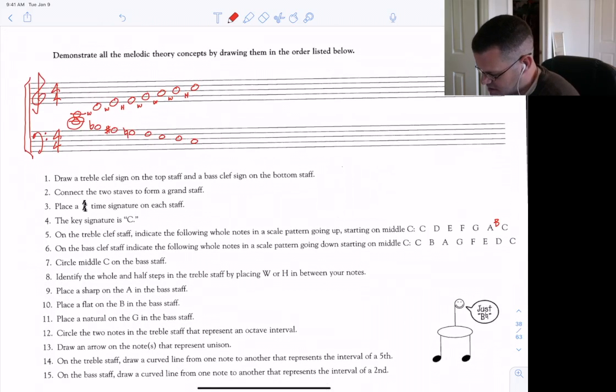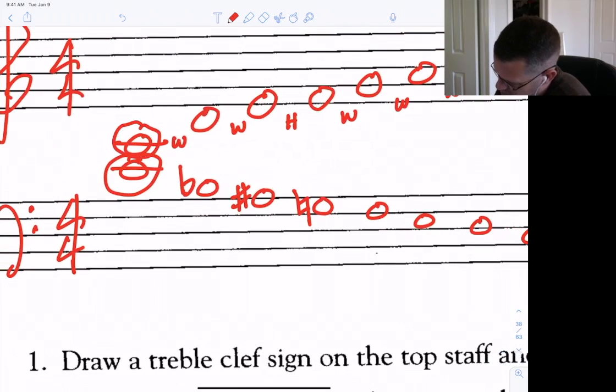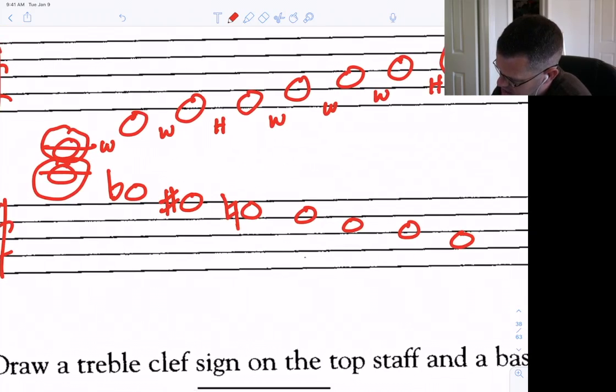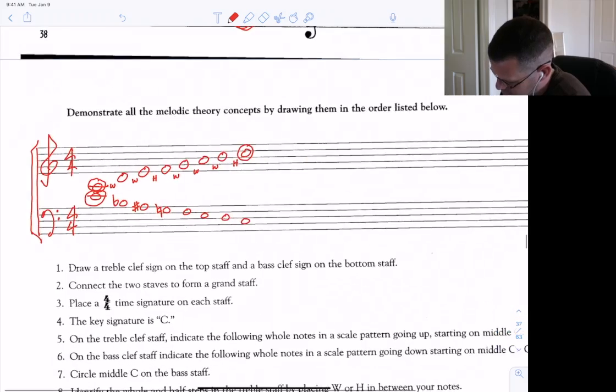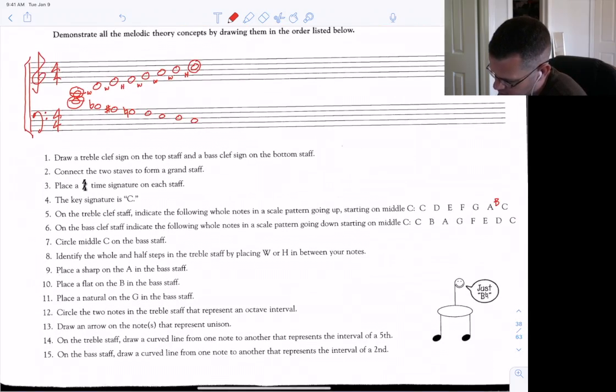Circle the two notes in the treble staff that represent an octave interval. Two notes in the treble staff. That would be C and C.